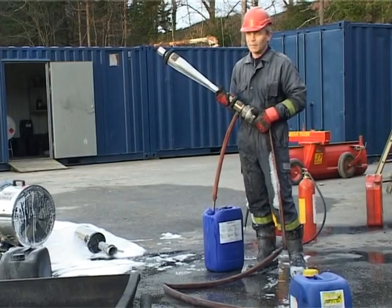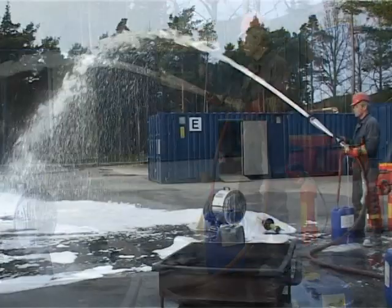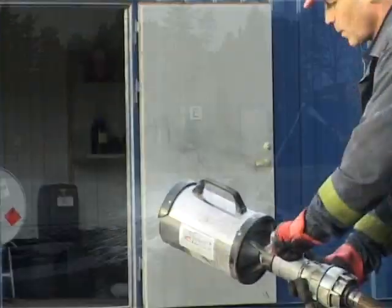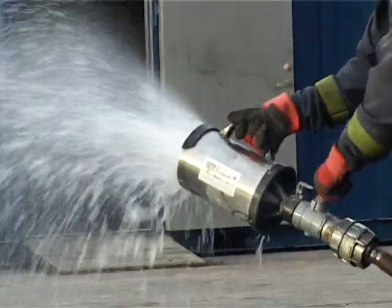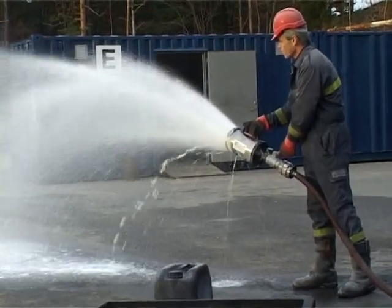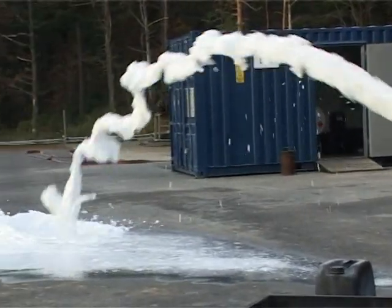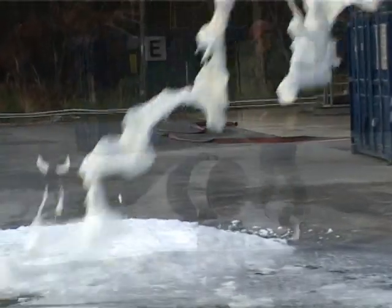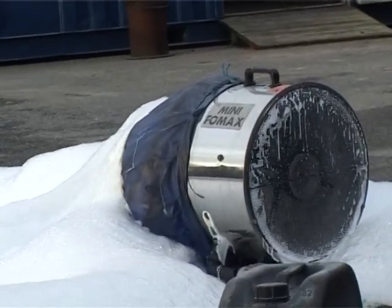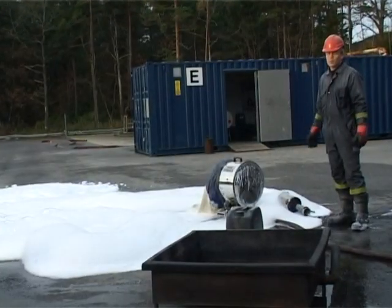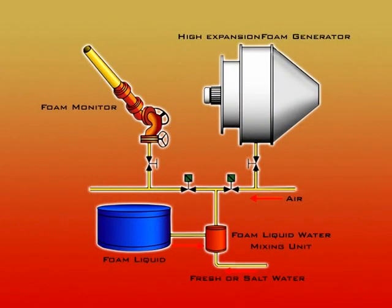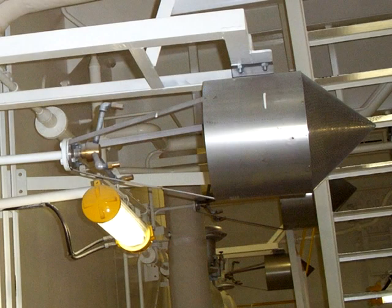Heavy foam with a ratio of approximately 1 to 10 has a long air throw and is used extensively on board. Medium foam with an approximate ratio of 1 to 100 has a moderate air throw and is used on tankers where long throws are not required. Light foam with an approximate ratio of 1 to 1000 has a short throw and is used in vessels like car carriers where it is required to fill a large compartment, as well as in vessels fitted with fixed foam systems on deck and in compartments like engine rooms and pump rooms.